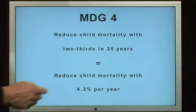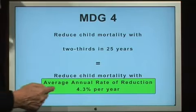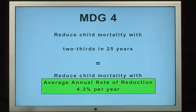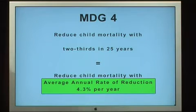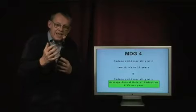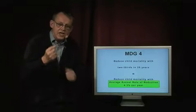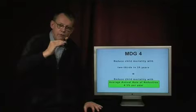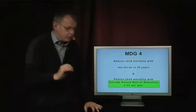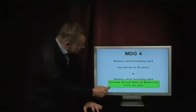A modern way to measure that is the average annual rate of reduction — this measures child mortality the same way we measure economic growth, in percent change per year. The aim is to lower child mortality by 4.3% per year, more than 4%. Let me give you an example.